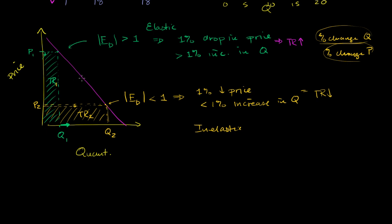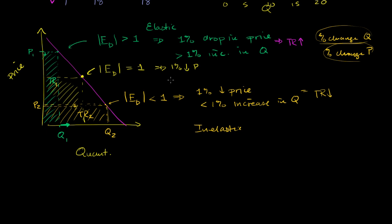And then you could imagine that right when you're at unit elasticity — someplace around there — a 1% drop in price will result in exactly a 1% increase in quantity demanded, and so they will kind of trade off. Many econ textbooks will tell you that you don't get a change in revenue. But if you actually do a detailed look at the math, the absolute value of price elasticity of demand equals 1, which tells us a 1% drop in price goes along with a 1% increase in quantity.